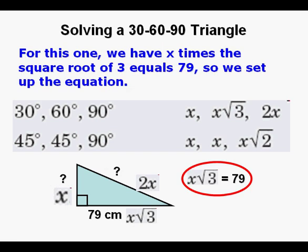Now we're going to look at another problem where we know the long leg of 79 centimeters. We have x times the √3 equals 79. So we set up the equation.